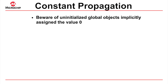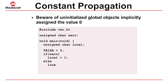The compiler considers implied initial values when looking for constant propagation optimizations. In this example, the global variable 'zero' is not initialised, so must be cleared by the runtime startup code. Since this variable is never modified, the controlling expression in the if statement will always be false, and the if statement can be removed, leaving only the false substatement. Since the object 'local' is now assigned only once before being used, its known value is directly assigned to LATB. The assignment to 'local' can now be removed, as can both variables 'local' and 'zero'.